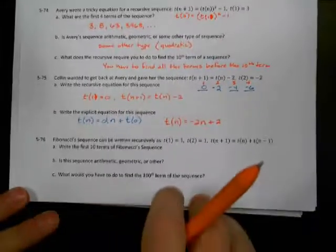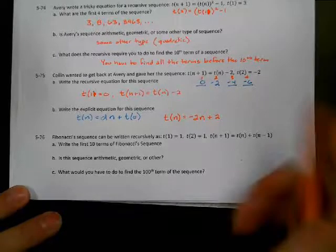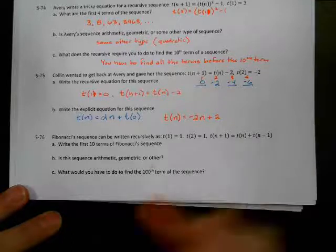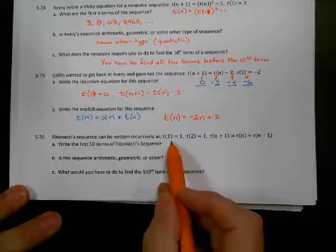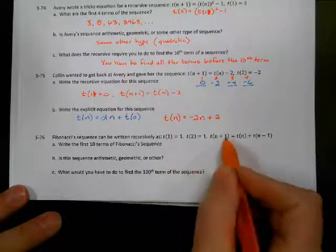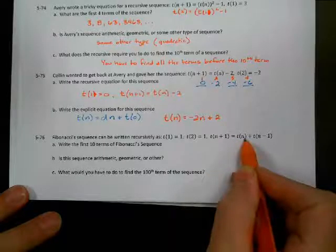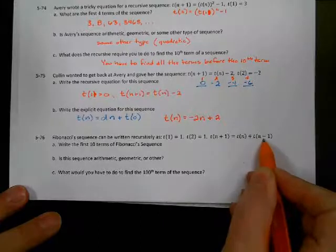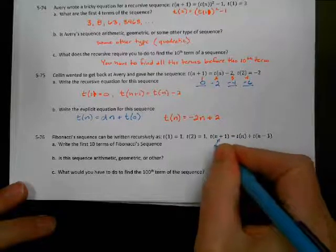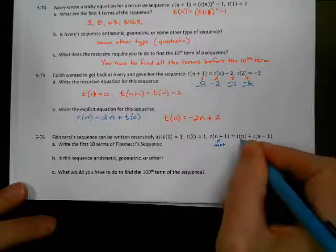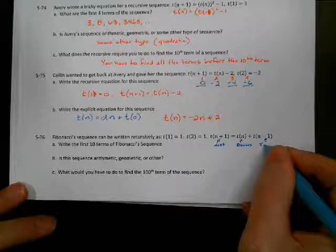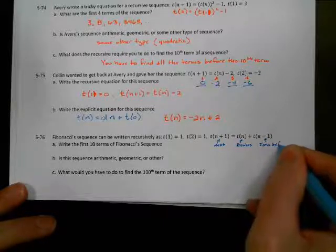The Fibonacci sequence can be written recursively. That was used a couple lessons ago — it uses the previous two terms. In Fibonacci, you need the first two terms: t of 1 is 1 and t of 2 is 1. The next term equals the previous term plus the term before the previous term — that's what t of n minus 1 means. So t of n plus 1 is the next term, t of n is the previous term, and t of n minus 1 is the term before the previous.